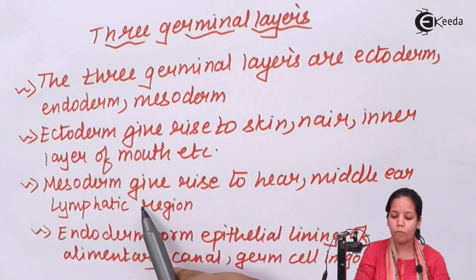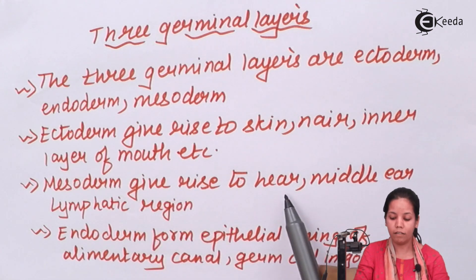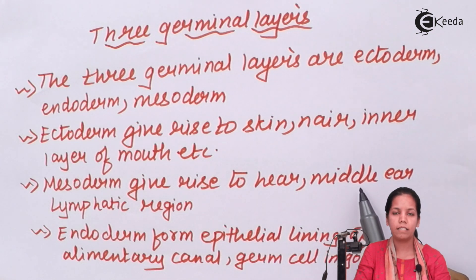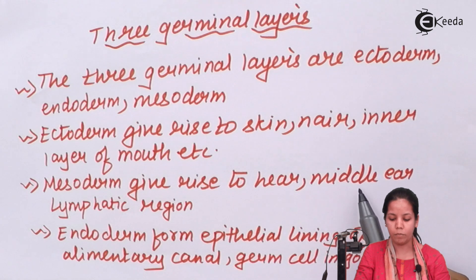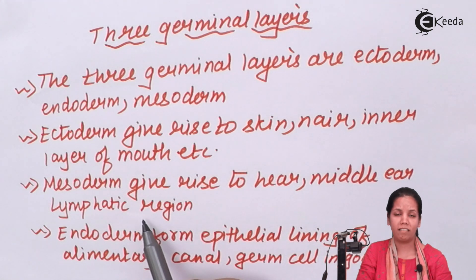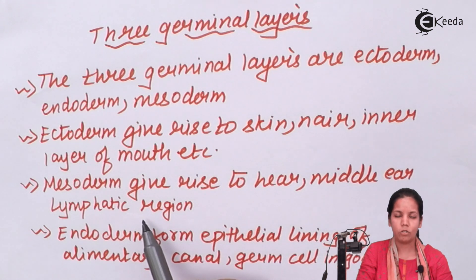Your mesoderm will give rise to your hearing or ear capacity. Also, the middle ear, the regions of ears which eyes are connected to, your optic nerve or the eye nerve, the sclera, and the ciliary muscles of the eye are made from mesoderm. The lymphatic region, the thymus, your adrenal gland region, and the hypothalamic regions of your brain are also made up of mesoderm.